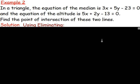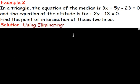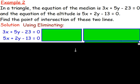Example two: in a triangle, the equation of the median is 3x add 5y minus 23 equals 0, and the equation of the altitude is 5x add 2y minus 13 equals 0. Find the point of intersection. Often in higher questions, parts a and b ask you to find the equations of the median and altitude, and part c asks for the point of intersection. I'm giving both equations and just doing the point of intersection part.